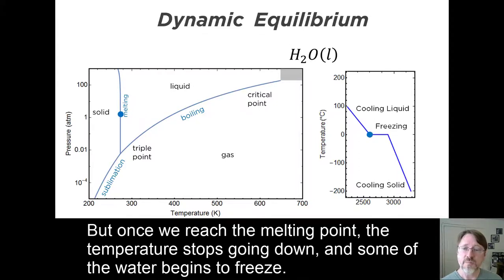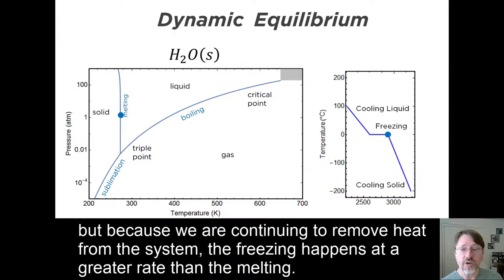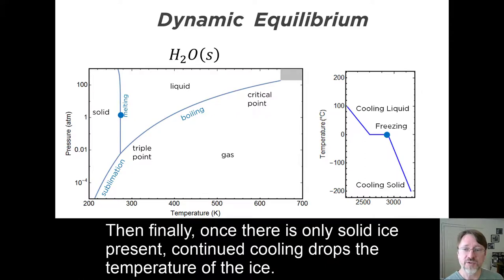But once we reach the melting point, the temperature stops going down, and some of the water begins to freeze. Importantly, both the forward and the reverse reaction are going on during this process. But because we are continuing to remove heat from the system, the freezing happens at a greater rate than the melting. Then finally, once there is only solid ice present, continued cooling drops the temperature of the ice.